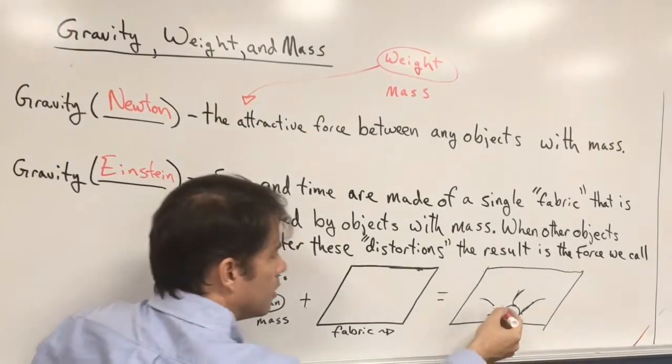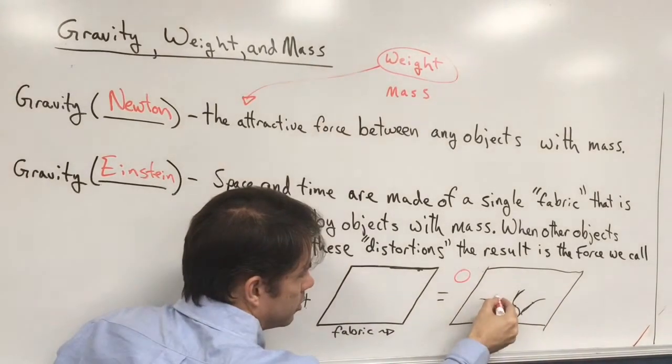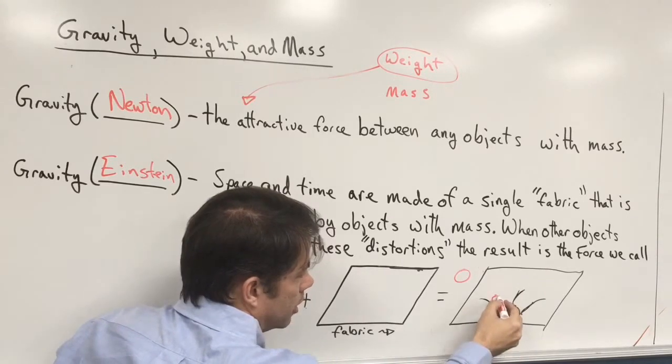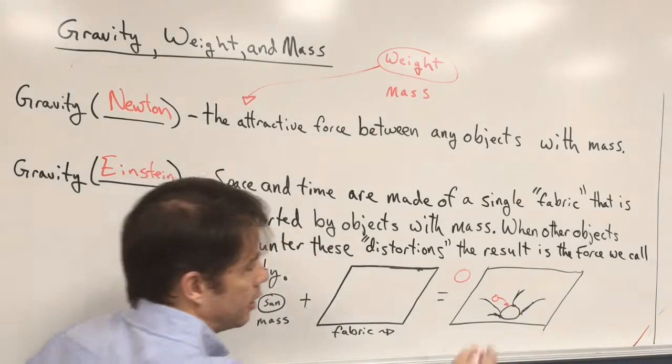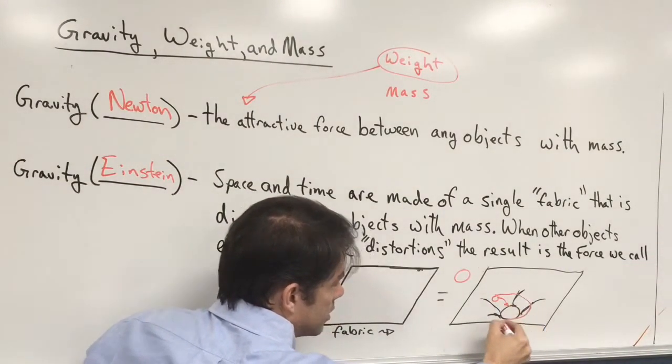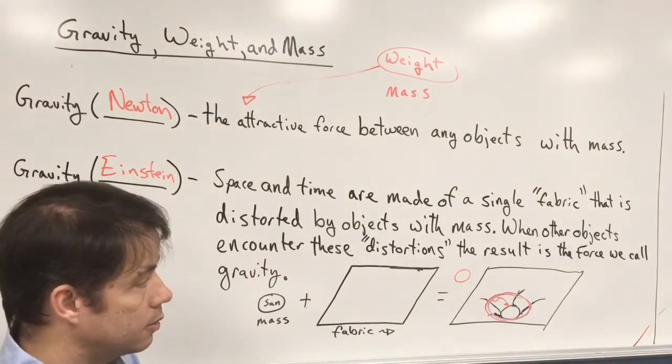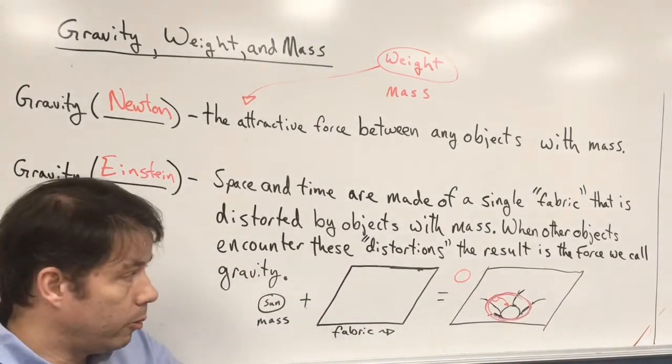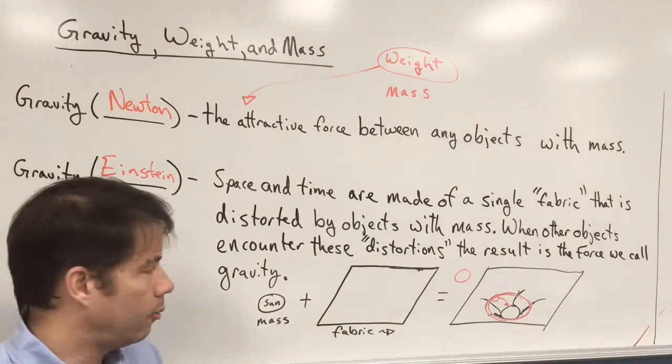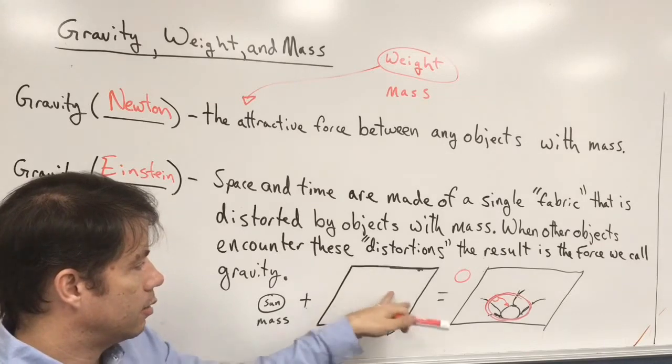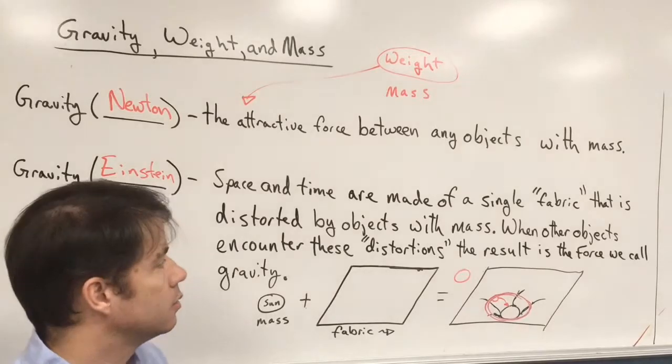So if I take the earth and I'm going to set it also on this fabric, it could roll towards the sun and fall into the hole created by the sun, but the earth is also moving, and so it basically wraps around in 3D, but it's caught by this hole that the sun is creating, or this bending, this, it's almost like a pothole. And the planets get trapped around the sun because of this folding of space.